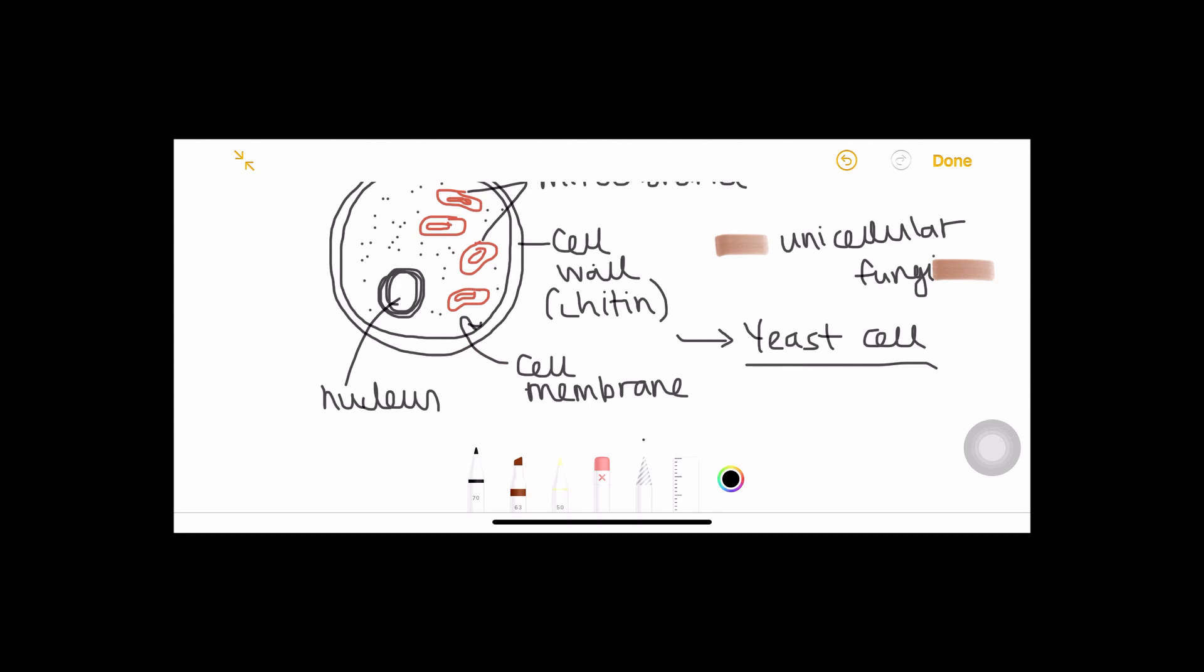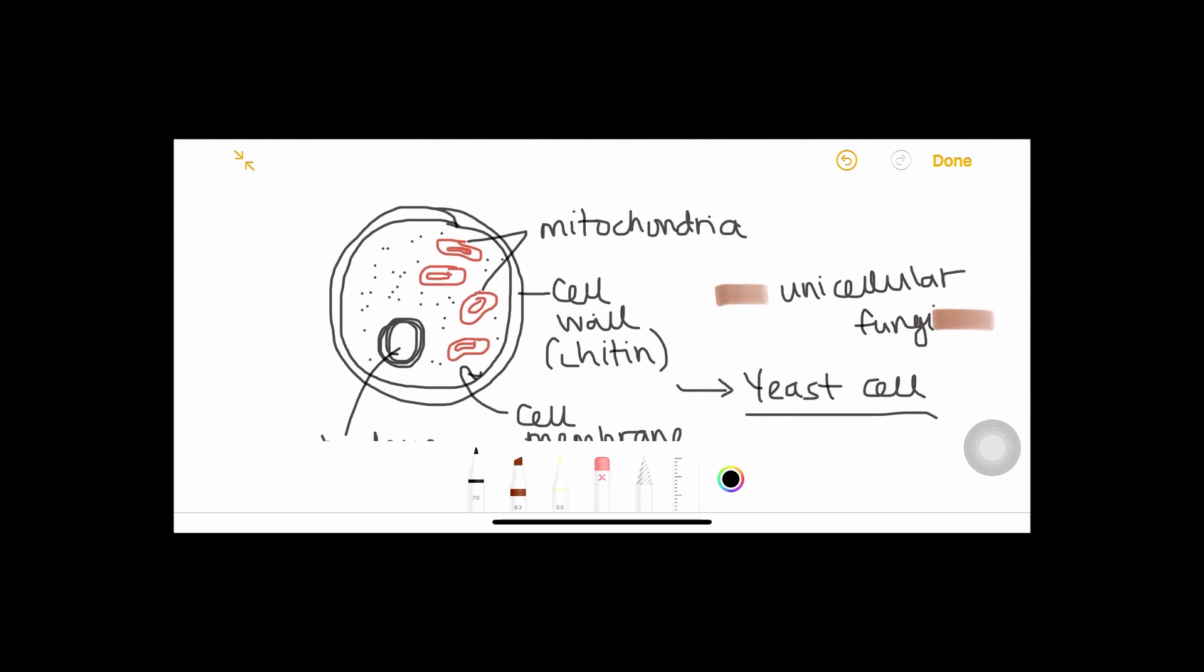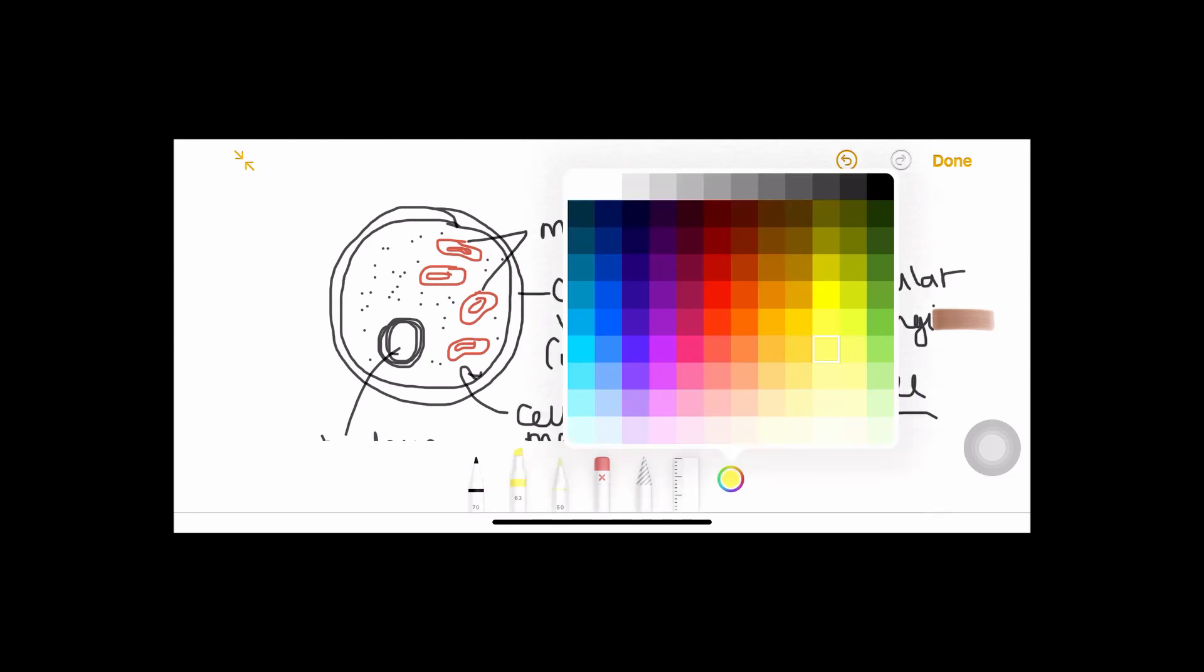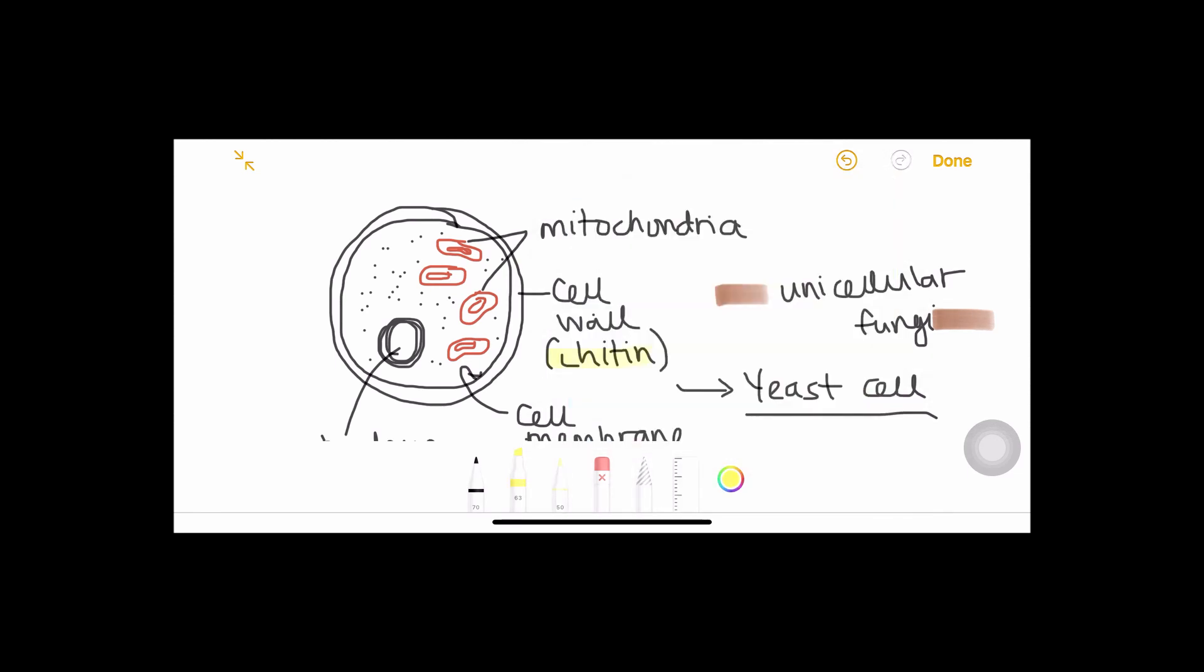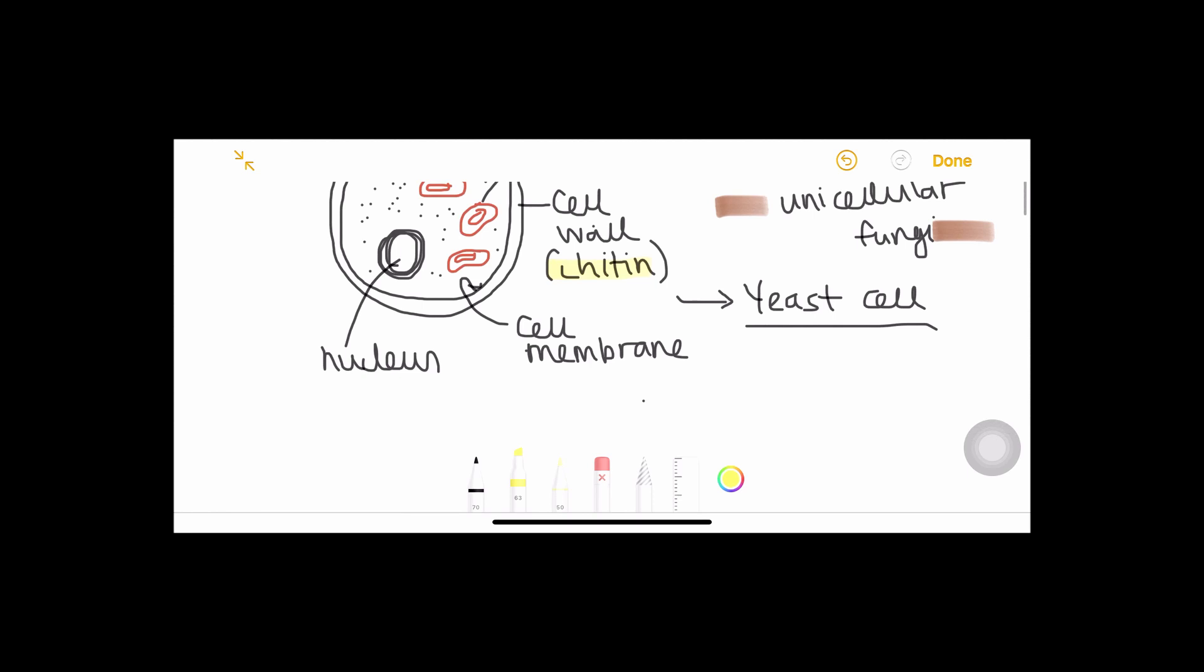If you look at the structure, it has a cell wall made out of chitin. This is very important, it's not made out of anything else, it's made out of chitin. They do have mitochondria and they do have a nucleus, they do have a cell membrane.